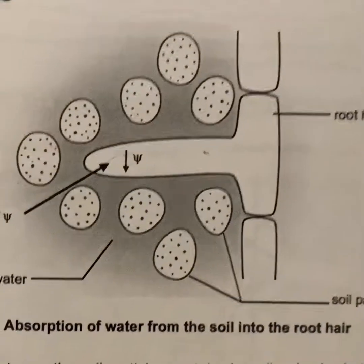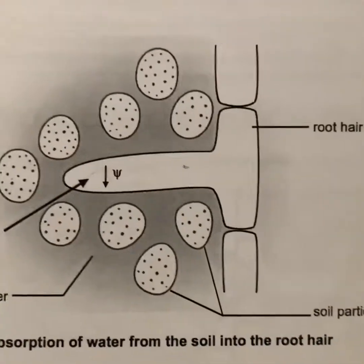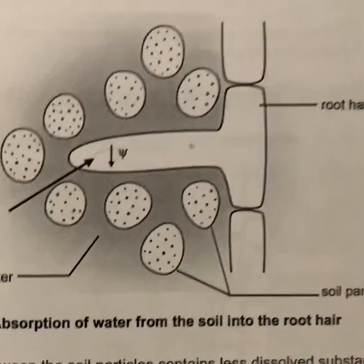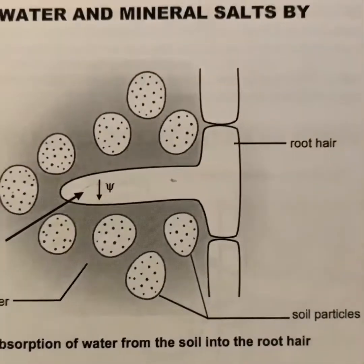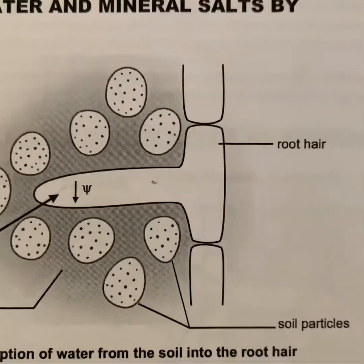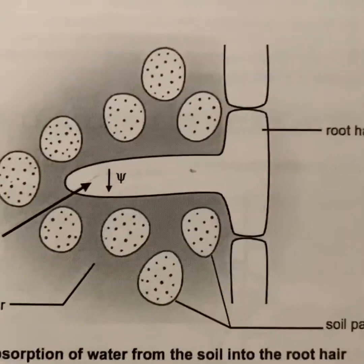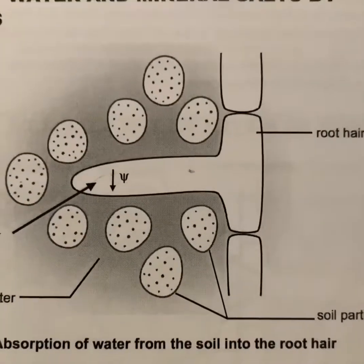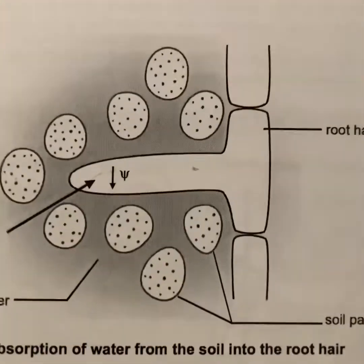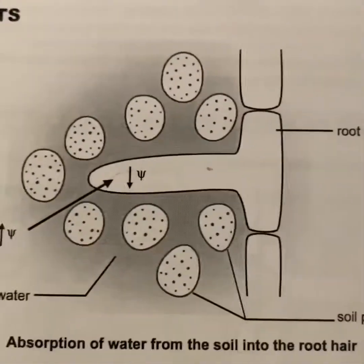The absorption of mineral salts into the root hairs is a different process because it is an active process. Soil water has a lower concentration of dissolved nutrients than the cell sap, so there is a low concentration of mineral salts in the soil water whereas the root hair has a high concentration. Because this process is active, energy is needed — whereas water absorption is passive and no energy is needed. That's where the mitochondria comes in, as the energy house of the cell.